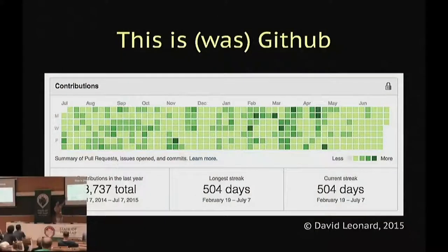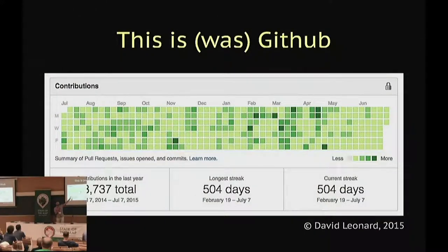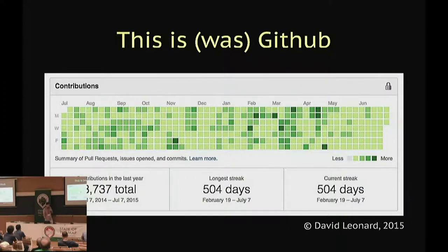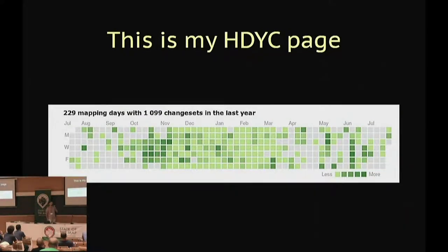So you see, there is a matrix of activity when you made some contributions to GitHub, and there is a streak, which means the number of days you have mapped consecutively without gaps. This is Pascal's how-did-you-contribute page. It also has a matrix of activity, but it is missing one thing.